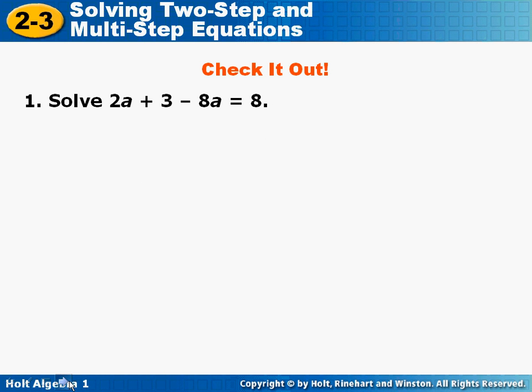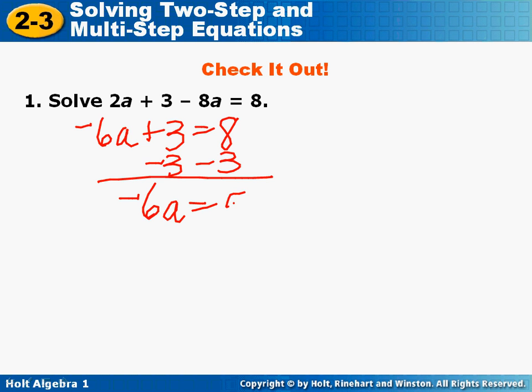Okay, we're going to work out the check it out problems. 2a minus 8a is -6a, plus 3 is 8. Subtract 3 from each side. -6a is 5. And dividing, the final answer is negative 5/6.